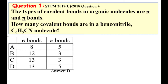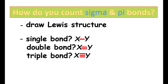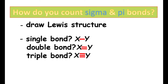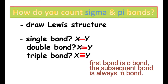Before we answer this question, let's see how we are going to determine the number of sigma bonds and pi bonds in a molecule. First, draw the Lewis structure of the molecule. Then, always bear in mind that we have three types of bonds: single, double, and triple bonds — and they are made up of sigma bonds and pi bonds. The first bond is always a sigma bond, and the subsequent bond is always a pi bond.